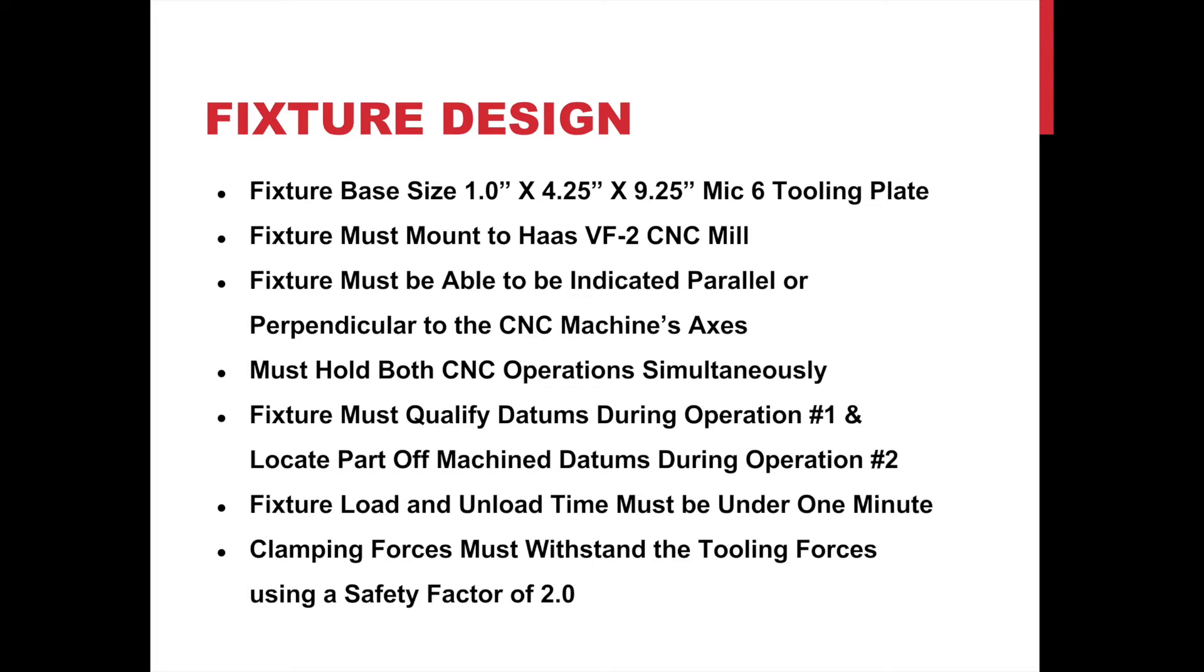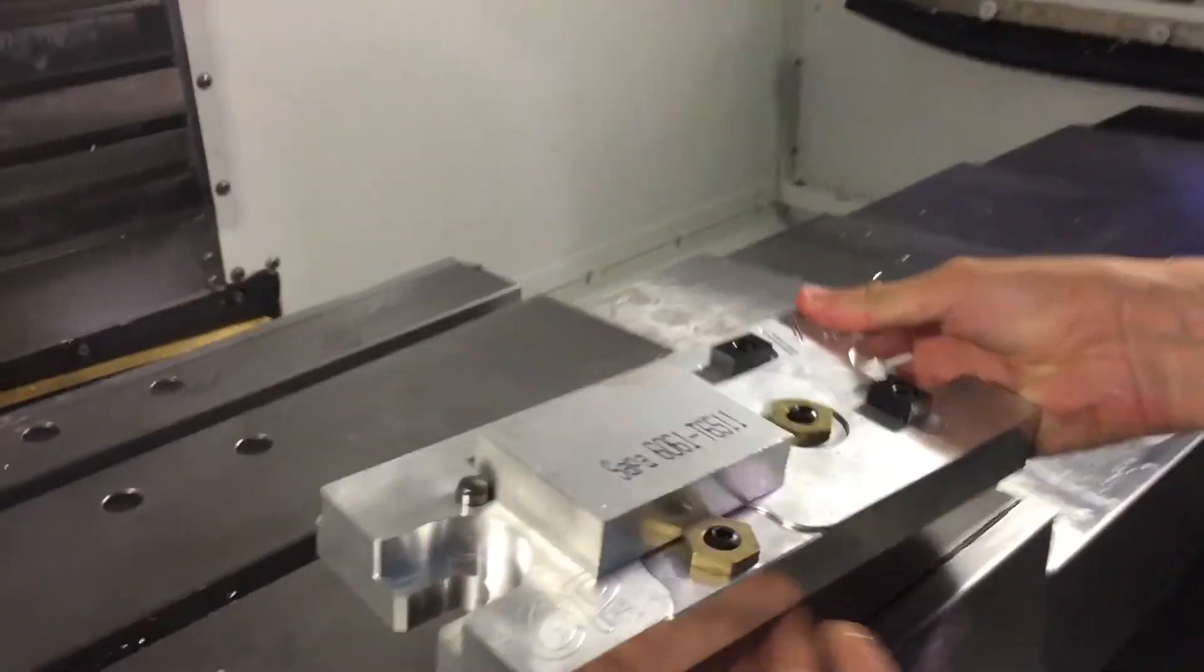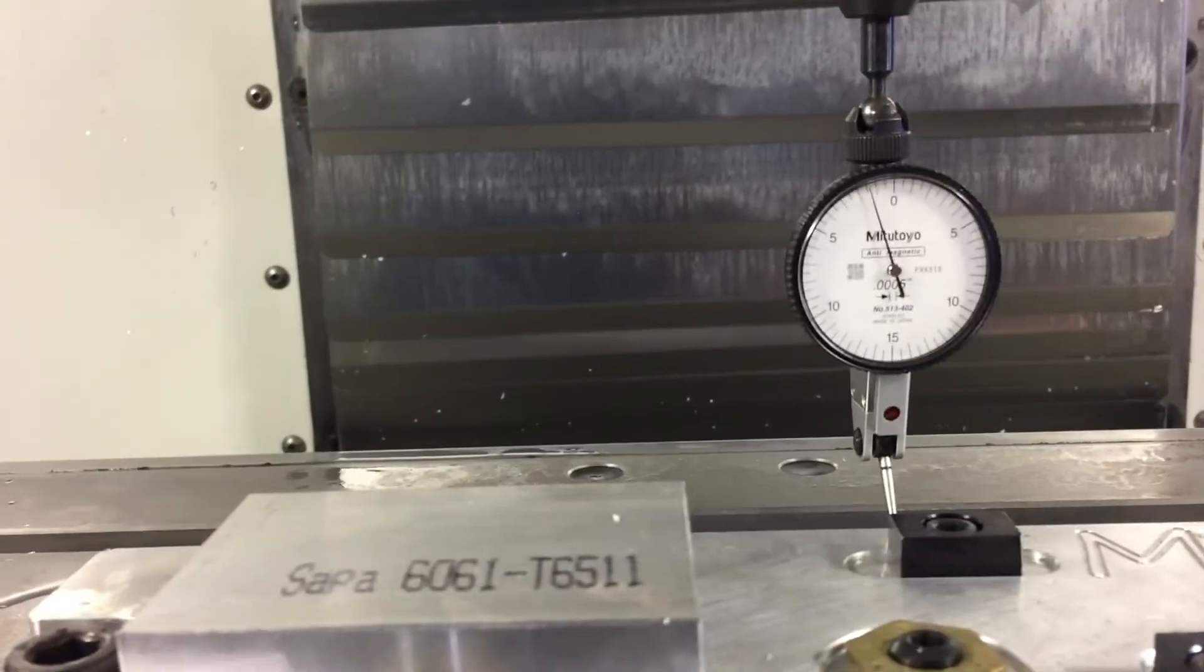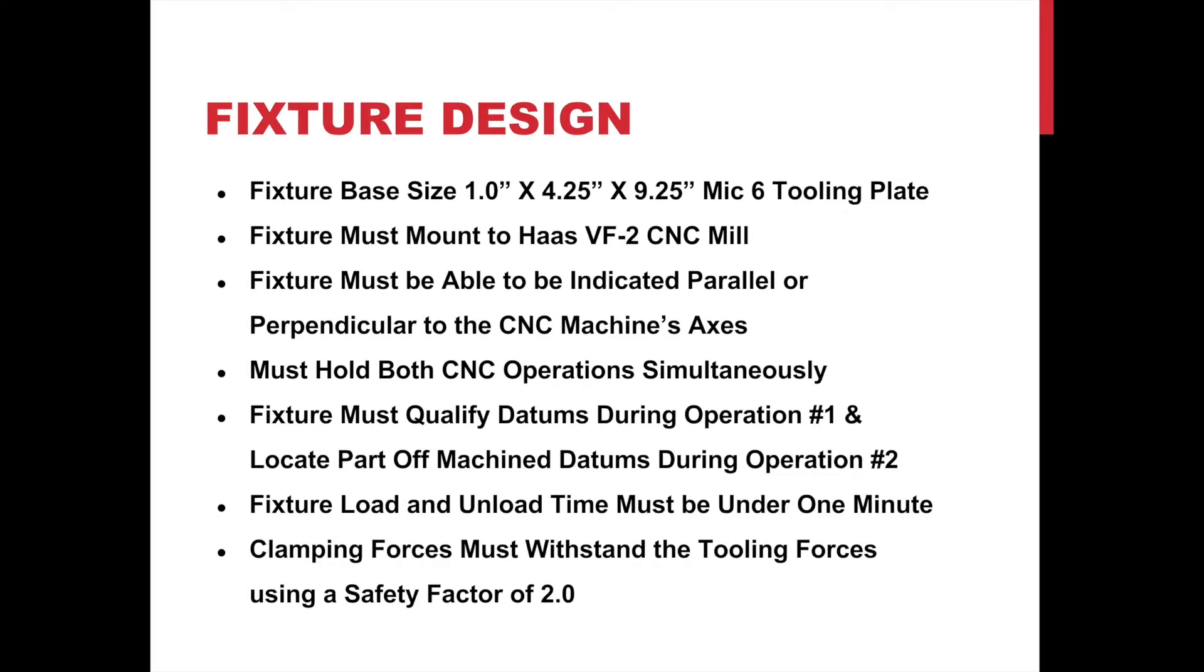Fixture design. Below you can see a list of the constraints that the team had to work with when designing the fixture base. The overall size constraints for the fixture was 1 inch by 4.25 inches by 9.25 inches. The fixture also had to mount to a Haas VF2 CNC mill and the fixture had to be indicated parallel or perpendicular to the axes of this machine. The fixture had to hold both CNC operations simultaneously based off of the datums listed in the part drawings. And the fixture had to be unloaded and loaded under one minute.